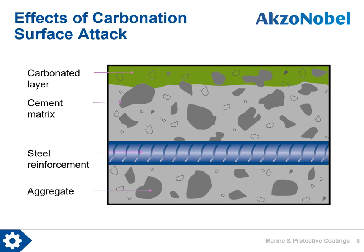In this image, we can see the effects of surface attack carbonation. The green portion at the top of the slide is the carbonated layer, which has already been influenced by atmospheric carbon dioxide to reduce the alkalinity. However, this has not penetrated the depth of the cement matrix through to the steel reinforcement. Hence, the steel is held in a passive state and no further deterioration occurs.